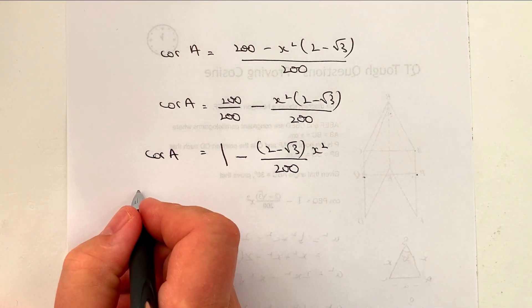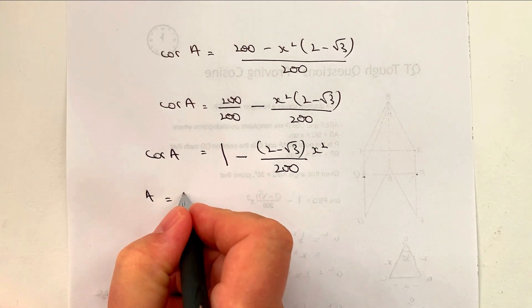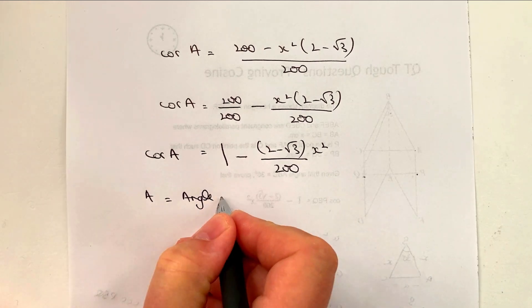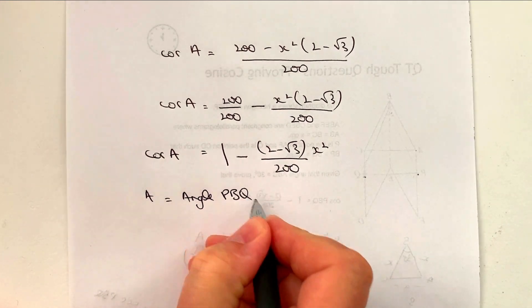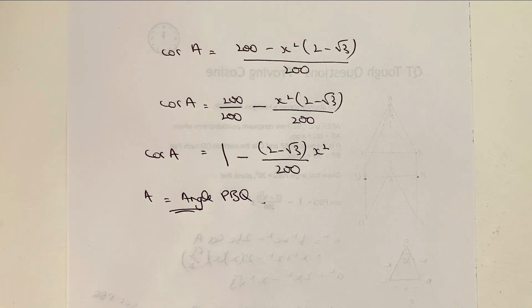And this is because if we like A equals angle PBQ. And that would be the answer to that question. Okay, so a little bit tricky. Hope it's been useful to you.